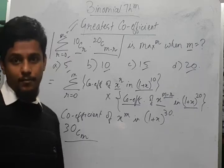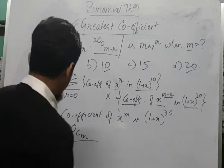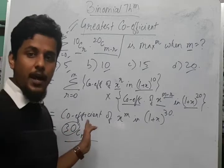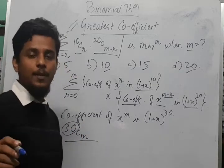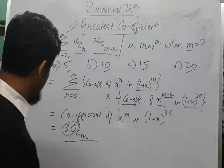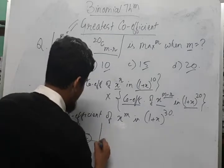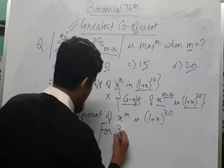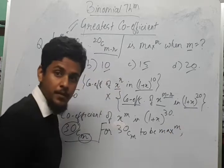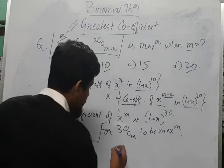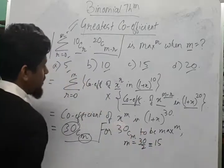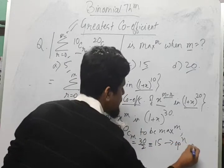Now when is 30Cm maximum? Since 30 is an even number, and we know that for even n the greatest coefficient occurs at nC(n/2), so for 30Cm to be maximum we have m equal to 30 divided by 2, which equals 15. That is option C.